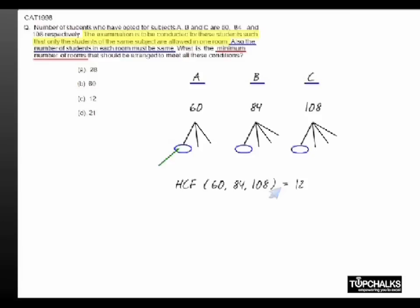In which case you will need 5 rooms for seating all people of A, 7 rooms for B, and 9 rooms for C. Hence the total number of rooms that we will need is 21. This is the minimum number of rooms.